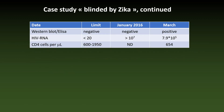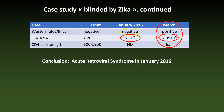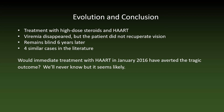And finally, last but not least, HIV. The ELISA and Western blot were positive, with high viremia but conserved CD4 cells. Looking back to January with the help of stored samples: negative ELISA and Western blot but very high viremia, establishing the diagnosis of acute retroviral syndrome. The patient was treated with high-dose steroids and highly active antiretroviral therapy. The HIV viremia disappeared, but the patient did not recuperate vision and remains blind six years later. We have found four similar cases in the literature. Would immediate treatment with HAART in January 2016 have averted the tragic outcome? We'll never know, but it seems likely.